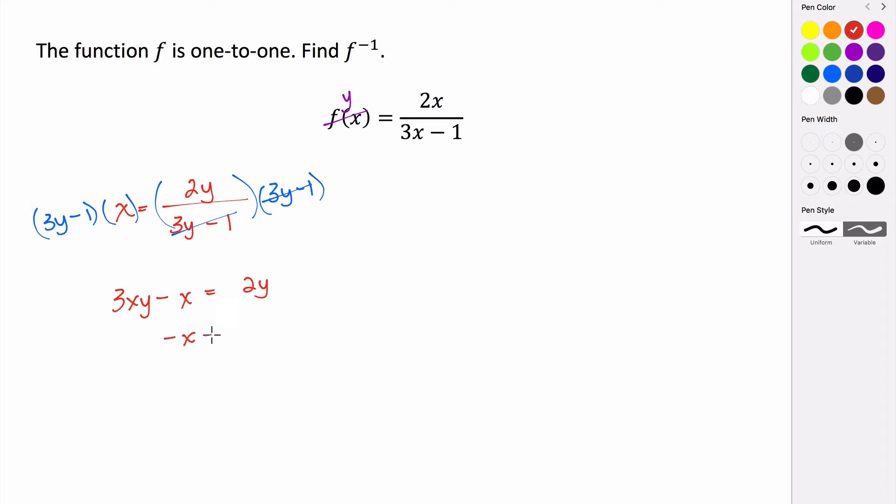That's going to give me negative x equals negative 3xy plus 2y. Because these have a y in common, I can factor the y out, so I have negative x equals y times negative 3x plus 2.